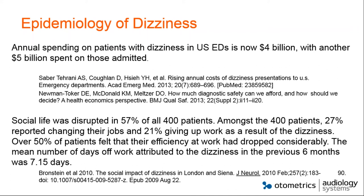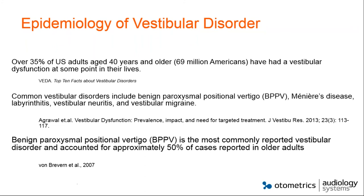A VEDA article reports that over 35% of U.S. adults aged 40 and older have a vestibular dysfunction at some point in their lives — a large number. The most common conditions include BPPV, Meniere's, labyrinthitis, neuritis, and vestibular migraine, according to Dr. Agrawal at Johns Hopkins. BPPV accounts for about 50% of cases in older adults, according to Bob Bevern.